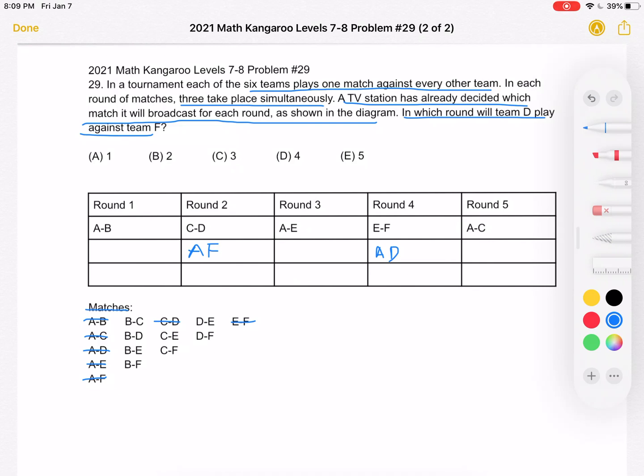Moving on, we can really go to any matches. I think that it might be easy to go to C,E and C,F. Where can we play C,E? Well, it can't go in round two because C is already there. It can't go in round three because E is already there. Round four has E, and round five has C. So that means that C,E must happen in round one.